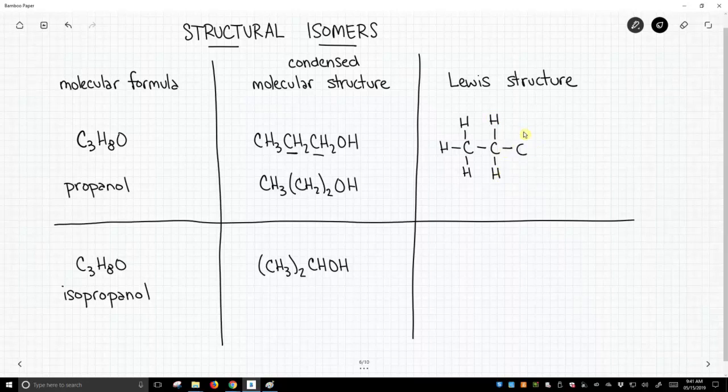Then we have yet another carbon that's attached to two hydrogens. And then we have the oxygen, which is attached to a hydrogen. Now this oxygen doesn't have a full octet, and these oxygens typically have two lone pairs, and that completes the structure.